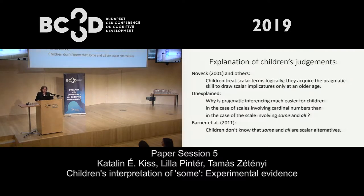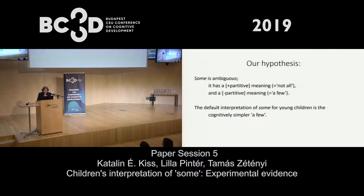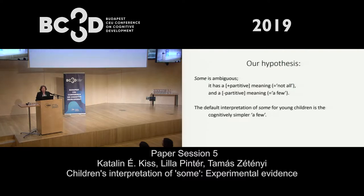Another explanation by Barner et al. is that children don't know that 'some' and 'all' are scalar alternatives — they are members of the scale. Our hypothesis is that 'some' is ambiguous — in fact, it's not a hypothesis, it's a fact. In adult language it's ambiguous: it has a partitive meaning, the equivalent of 'not all,' and it has a non-partitive meaning, the equivalent of 'a few.' Our hypothesis was that children acquire first the cognitively simpler 'a few' meaning, since the 'not all' reading is more difficult because it requires the reconstruction of a superset of which the given set is a part.